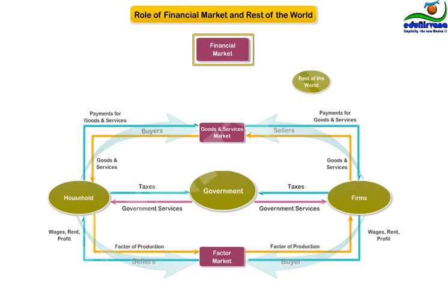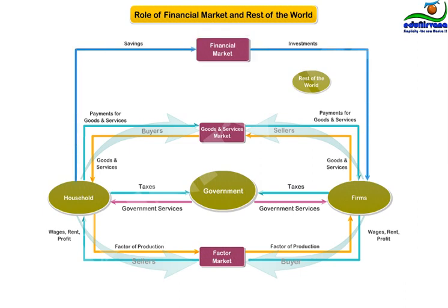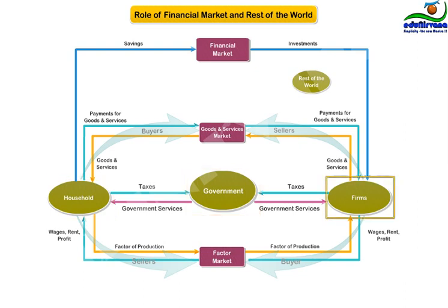Coming to the financial markets, they help in channeling savings from individuals and firms with surpluses to individuals and firms that need them. It includes banks, merchant banks, and others. Savings can come from households, government, firms, and the rest of the world, and can be channelized back to them.